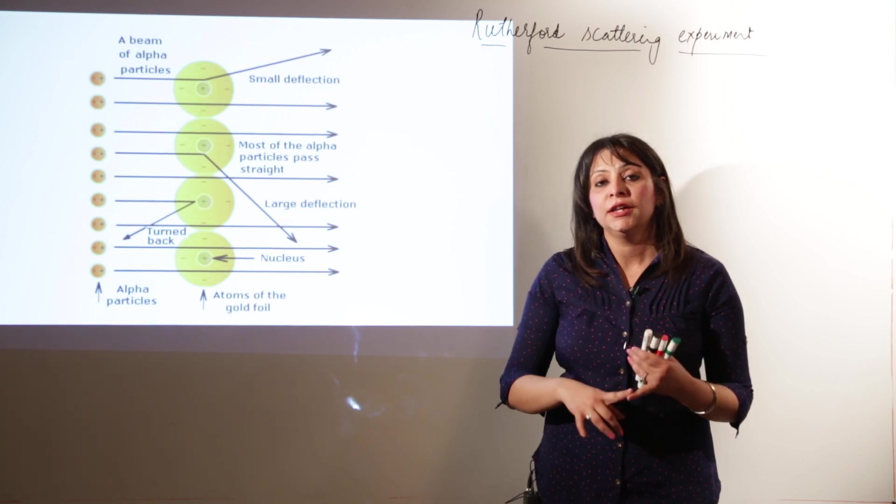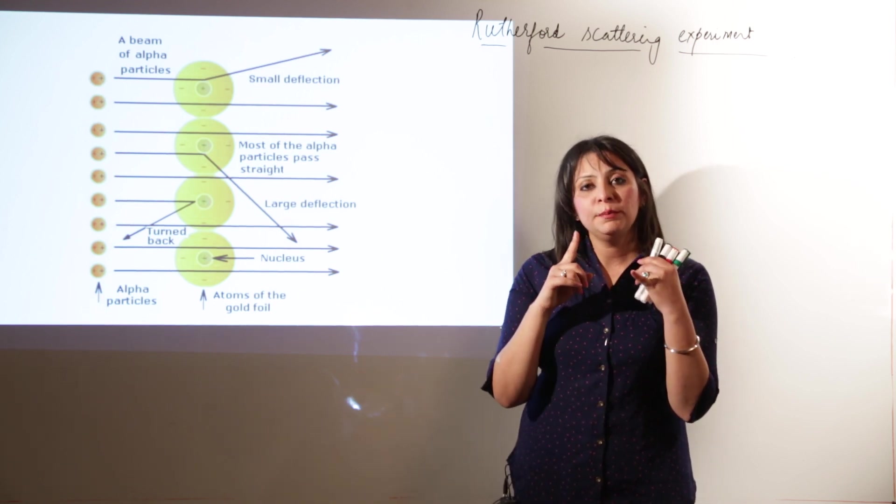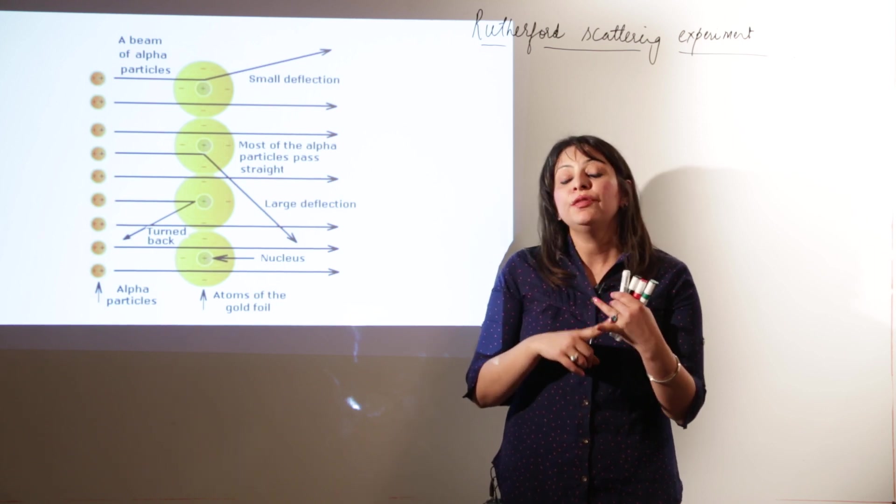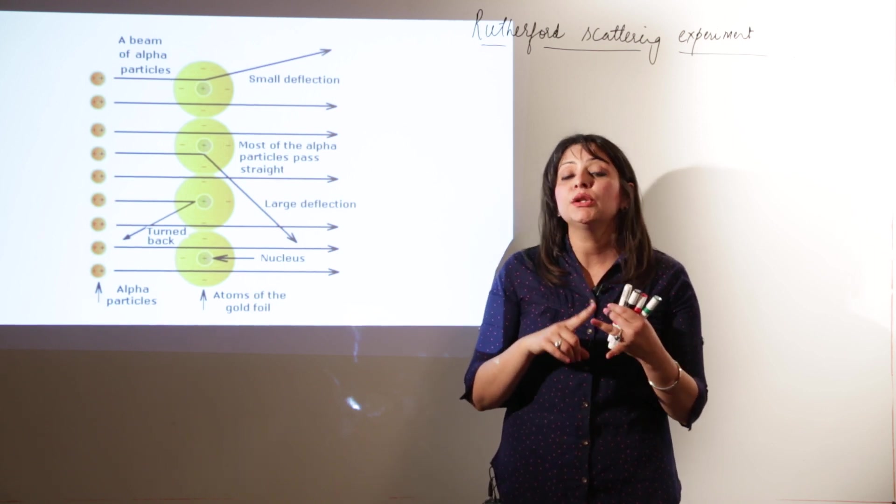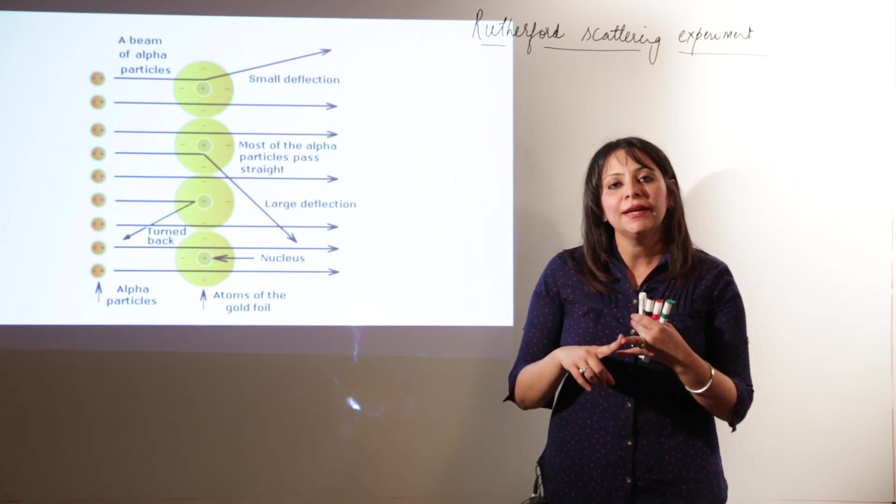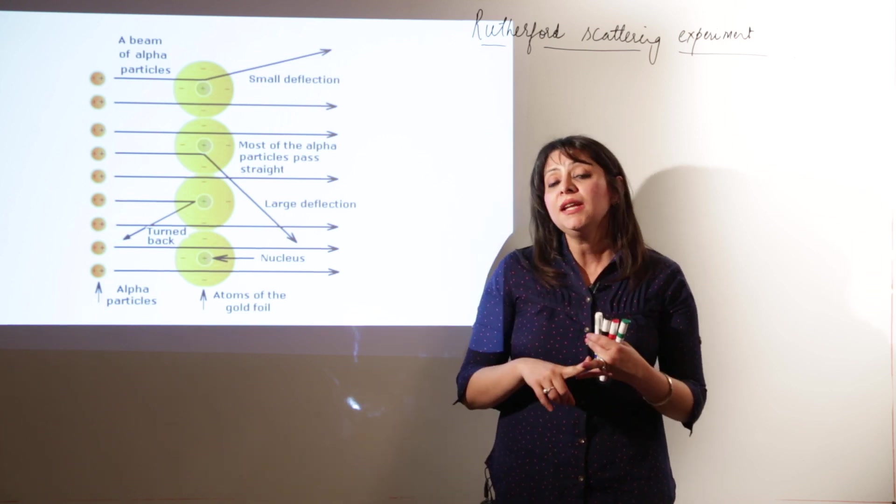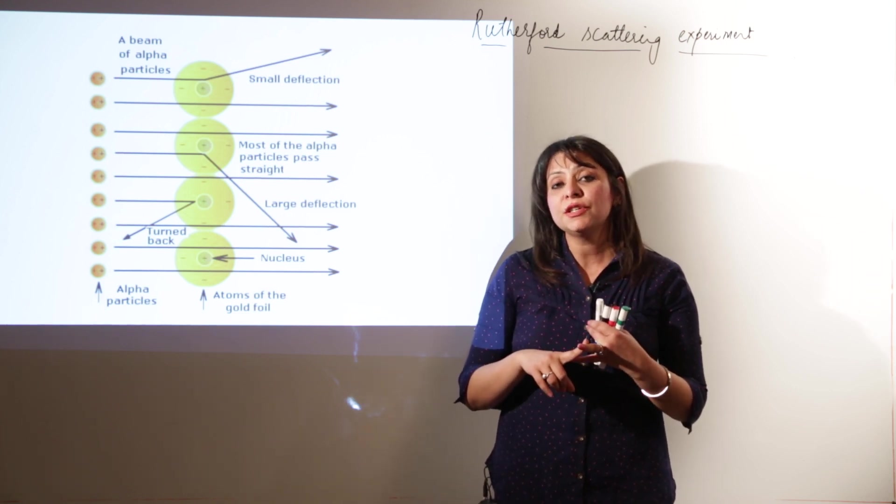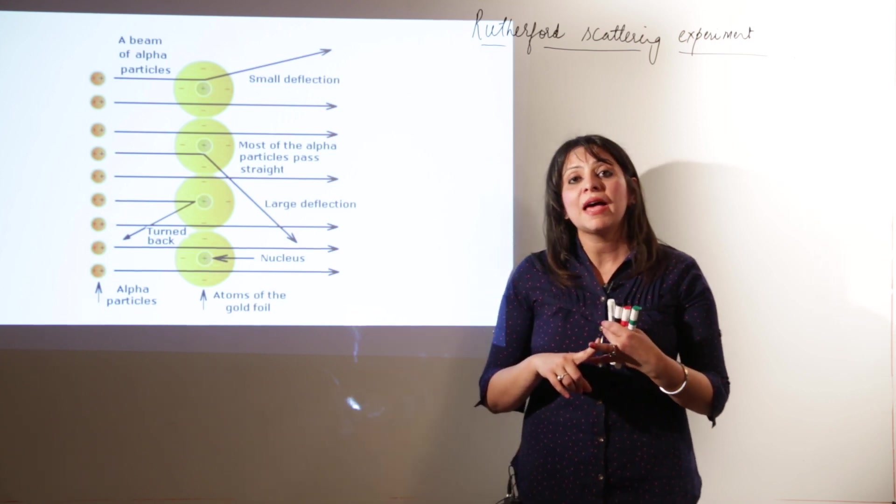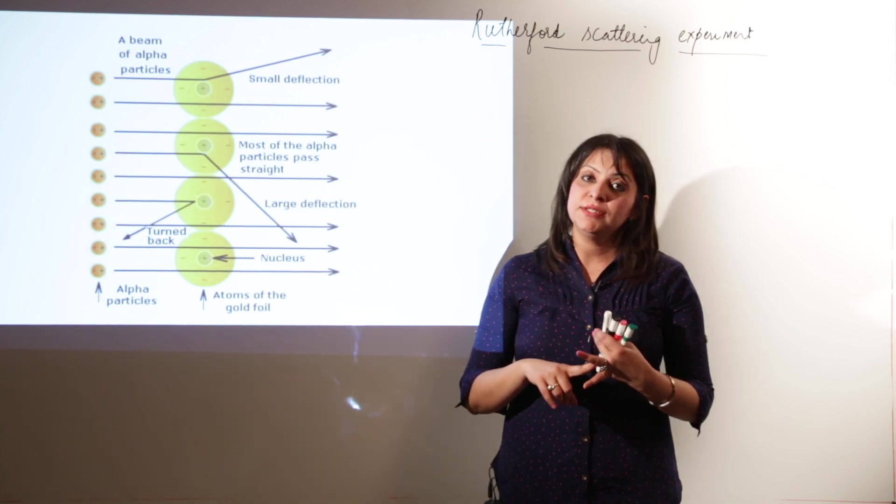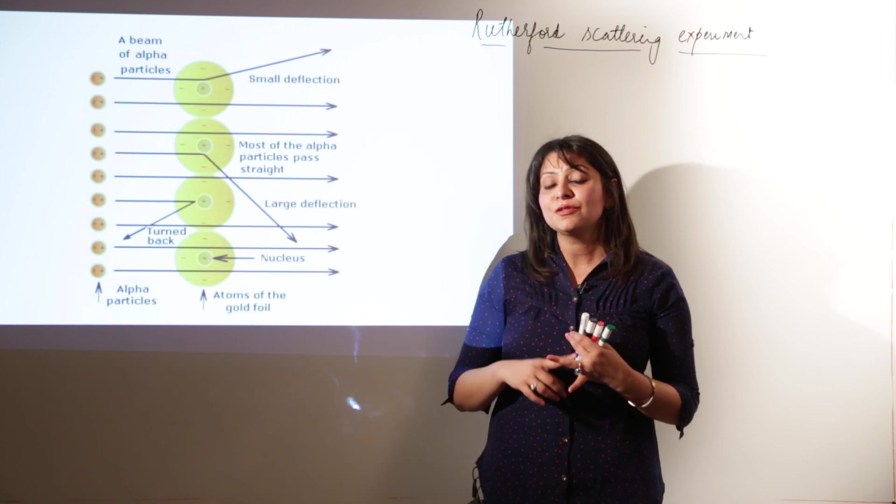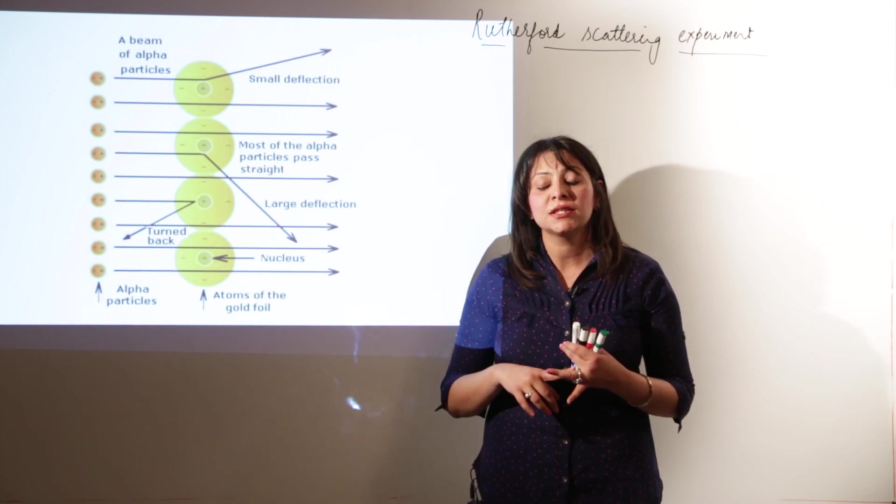These were the observations and the conclusions. I am listing it again. Observation was: many of the rays passed straight, few were deflected through small and large angle, and few retrace their path. And the conclusions made by Rutherford are that most of the space is empty in the atom. There is something in the center of the atom, a dense concentrated mass located in the center occupying a very small area, and he called that mass the nucleus. And third, nucleus is positively charged because few rays retrace their path.